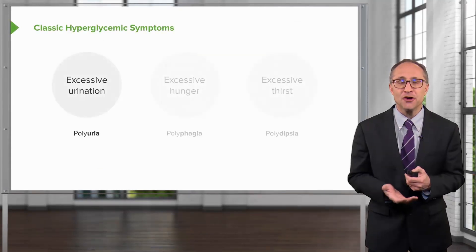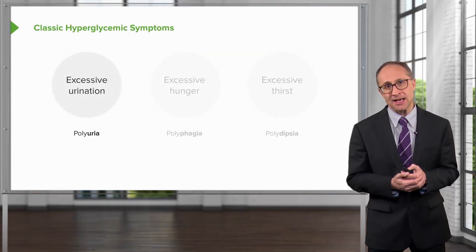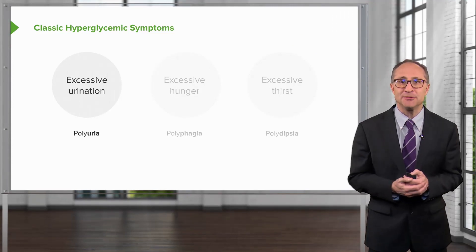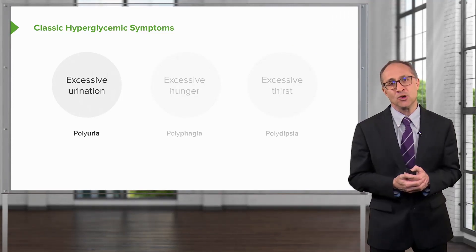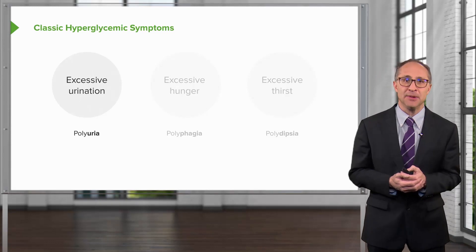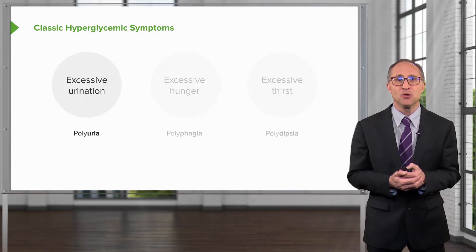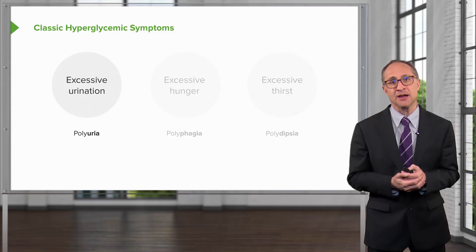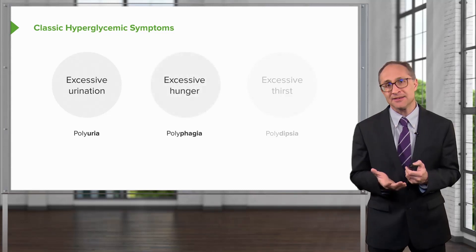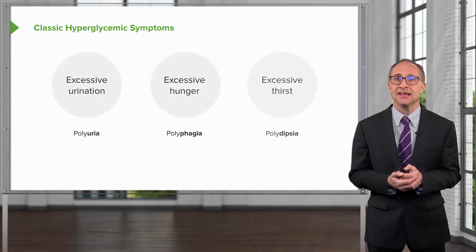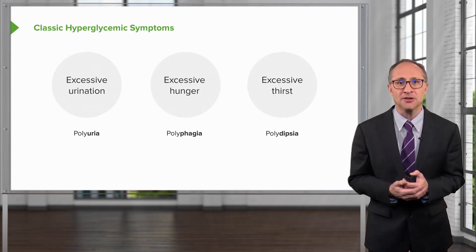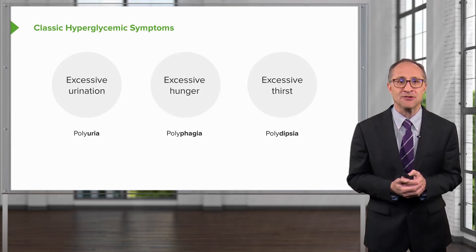The classic hyperglycemic symptoms form a generally accepted triad, although they don't necessarily always occur in patients with diabetes. But more often than not, excessive urination or polyuria, excessive hunger or polyphagia, and excessive thirst or polydipsia are hallmarks of elevated serum glucose.